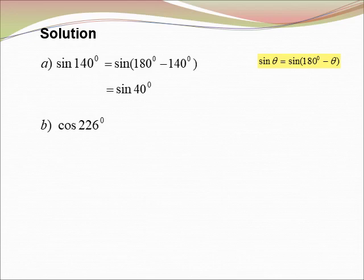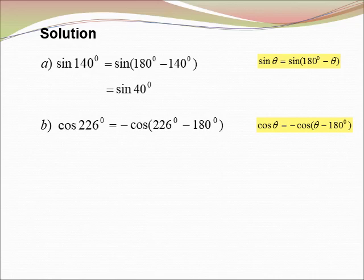B) cos 226°. 226° is in the third quadrant, and cos is negative in the third quadrant. For the third quadrant, to change to the first quadrant we use (θ − 180°). Our theta is 226°, so cos 226° equals negative cos(226° − 180°) equals negative cos 46°.